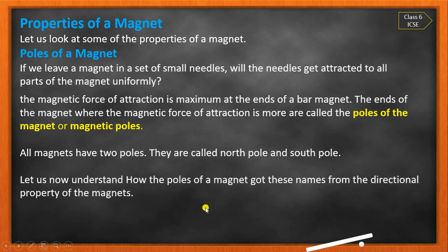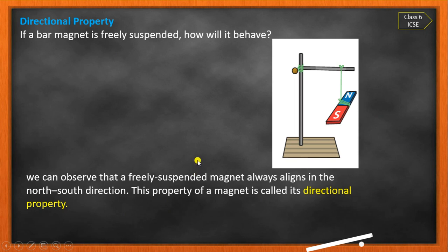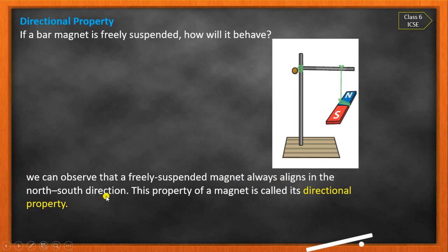Why are the poles named North and South? This comes from the directional property of the magnet. If a bar magnet is freely suspended by a thread in air, it always aligns in the North-South direction. This property of the magnet is called the directional property, and according to it the poles are named North Pole and South Pole.